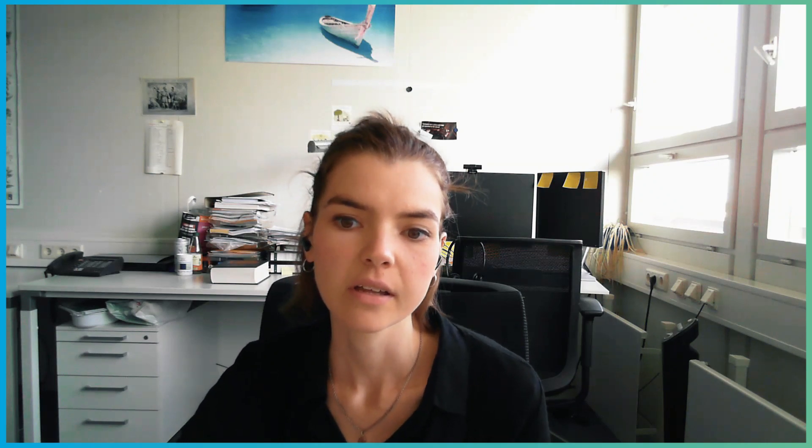In both systems, we could measure a cooling of the electrode during sodium deposition and a warming during dissolution of the sodium ions. Along with the behavior of the potential and current transients, these results show that in both systems the sodium deposition and dissolution is highly reversible. The corresponding values for the reversible heat are 75 kJ per mole for sodium deposition in DME, and 25 kJ per mole for the deposition in propylene carbonate.